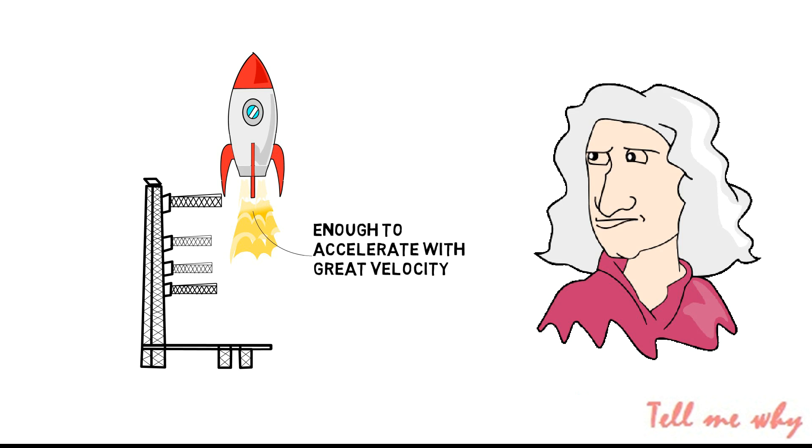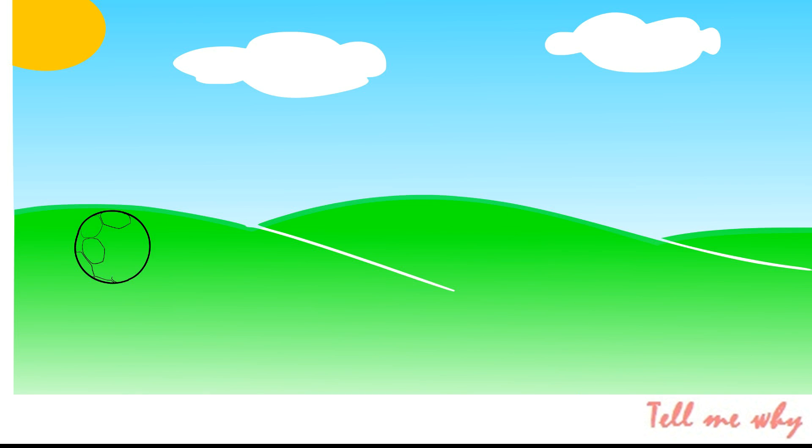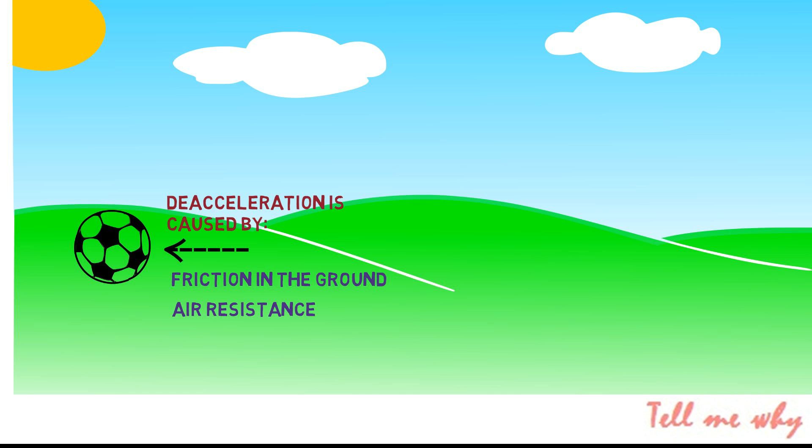Sir Isaac told us that New Horizons should continue in motion with the same speed and in the same direction unless acted upon by an unbalanced force. Here on Earth, we are used to seeing things decelerate pretty quickly when we let go of them. That deceleration is caused by unbalanced forces, things like friction with the ground or drag with the air.